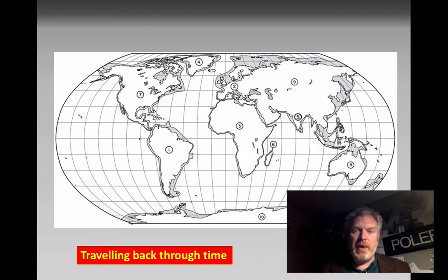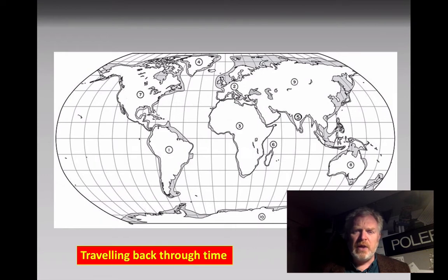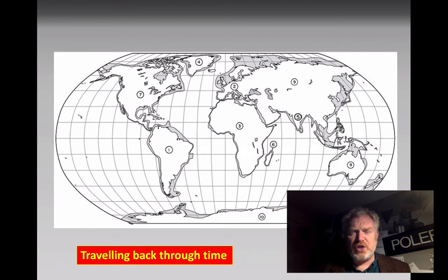This is a map we're fairly familiar with — it shows the current distribution of the continents around the world. The light gray shaded area is the continental part of the seas, where the sea is very shallow and there's actually continental crust underneath it.